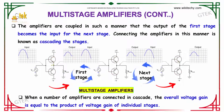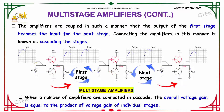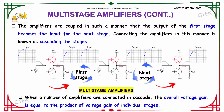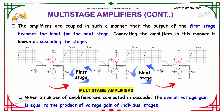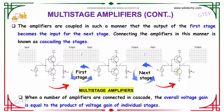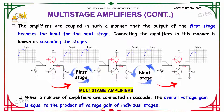The amplifiers are coupled in such a manner that one amplifier is coupled to the next, and that one to a third, so that the output of the first stage becomes the input for the next stage. Connecting amplifiers in this manner is called cascading the stages. When a number of amplifiers are connected in cascade, the overall voltage gain is the product of the voltage gains of the individual stages.